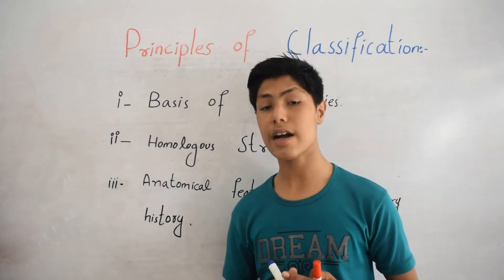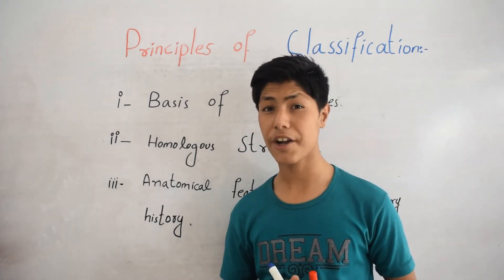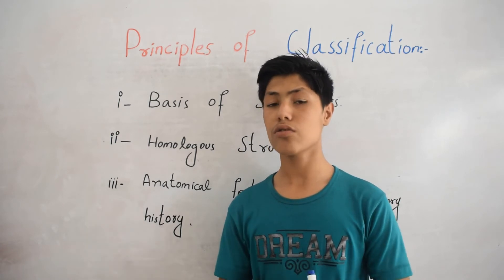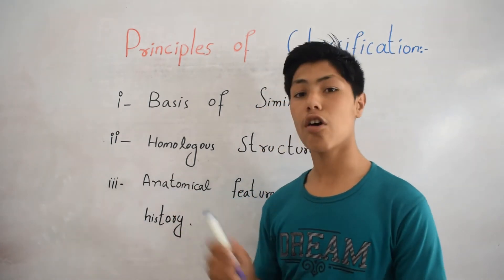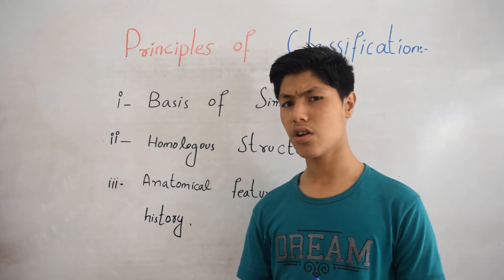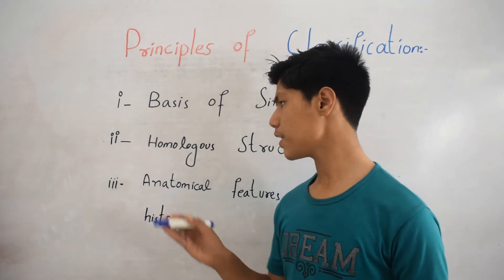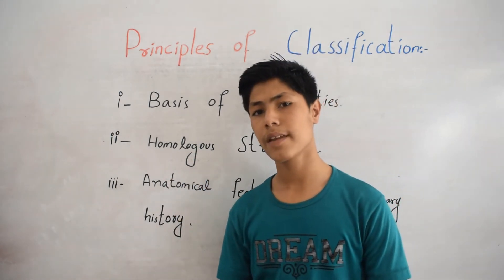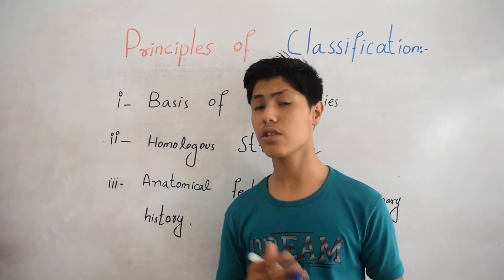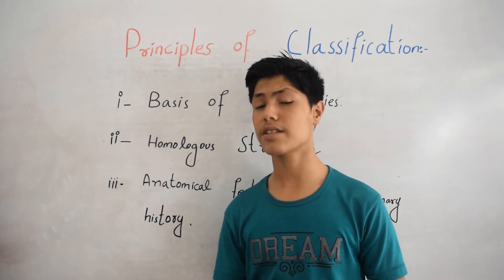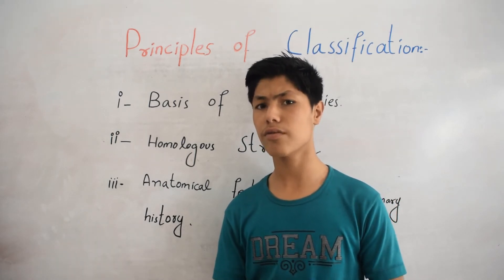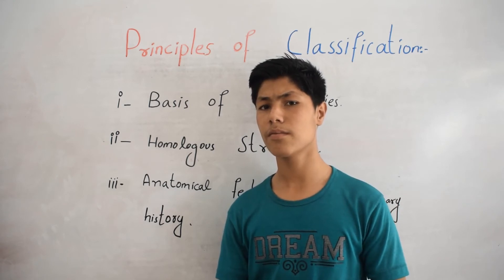The second principle is homologous structure. Organisms are also classified into one group or a closer group on the basis of homologous structure. Homologous means same — if organisms have the same structure, they are classified into one group or a closer group.